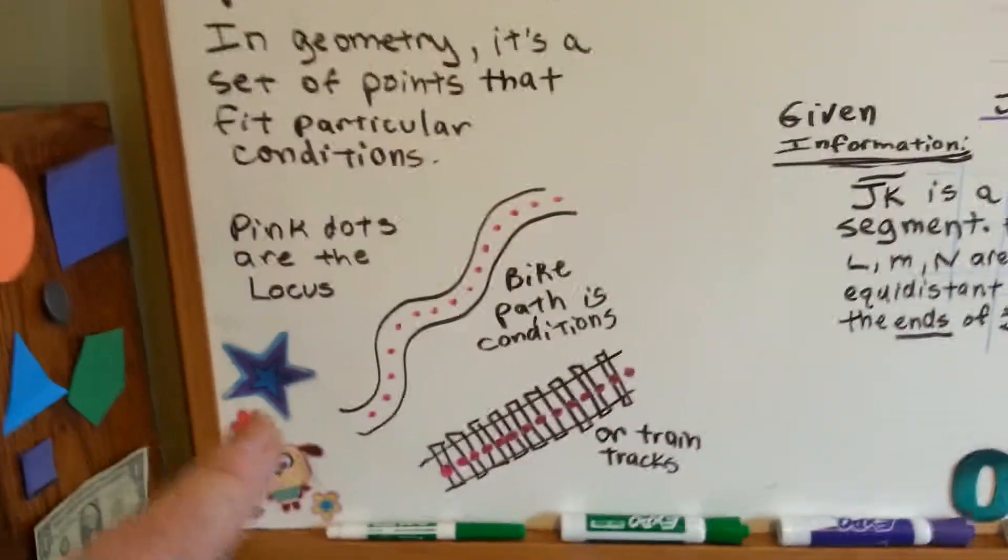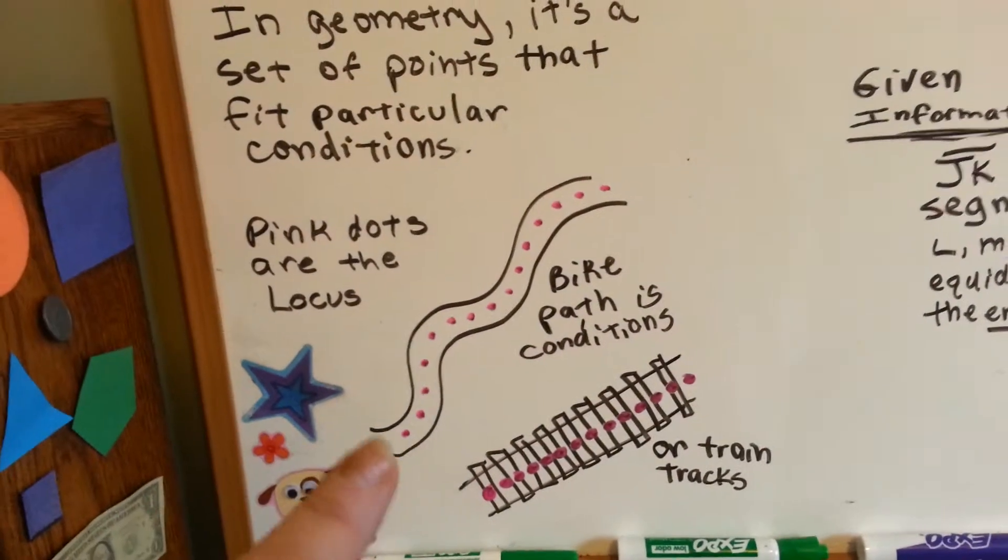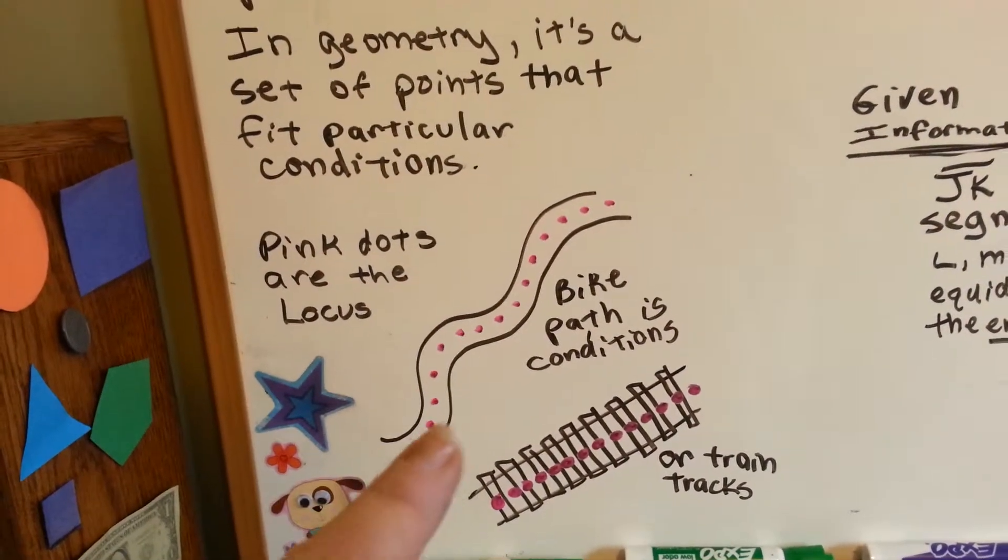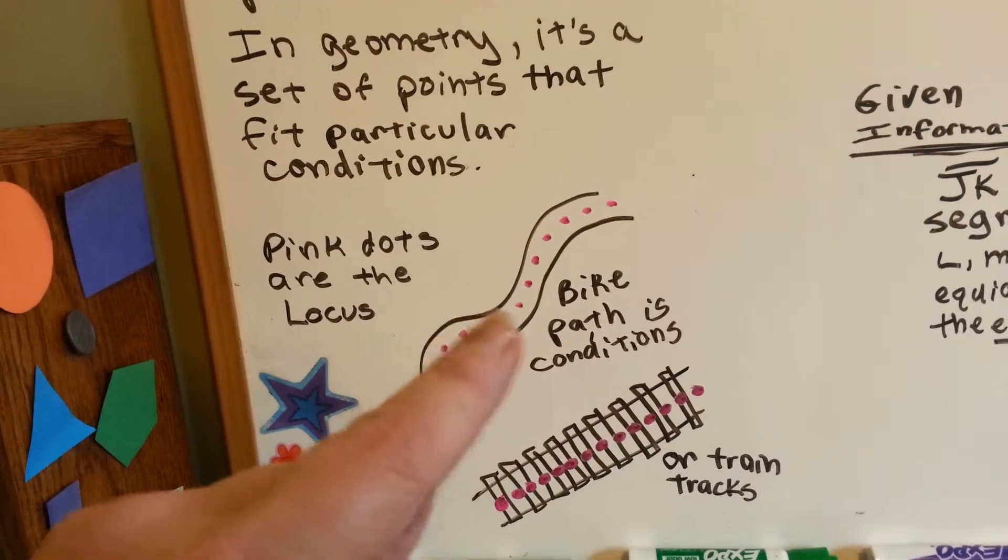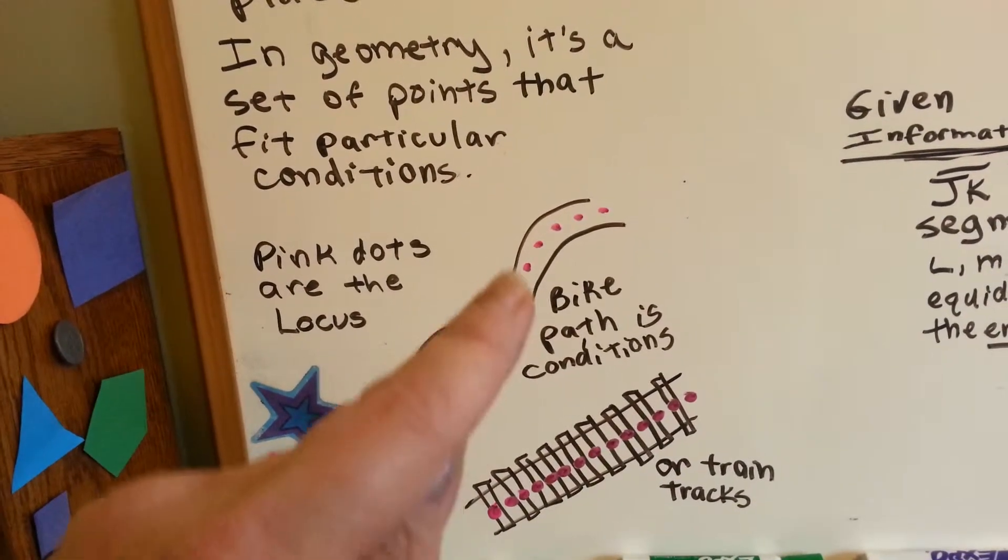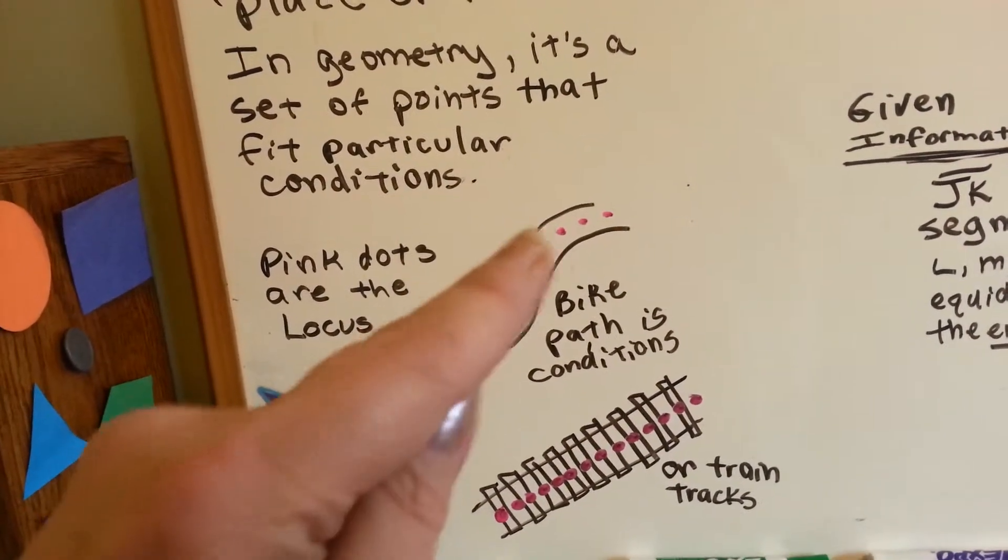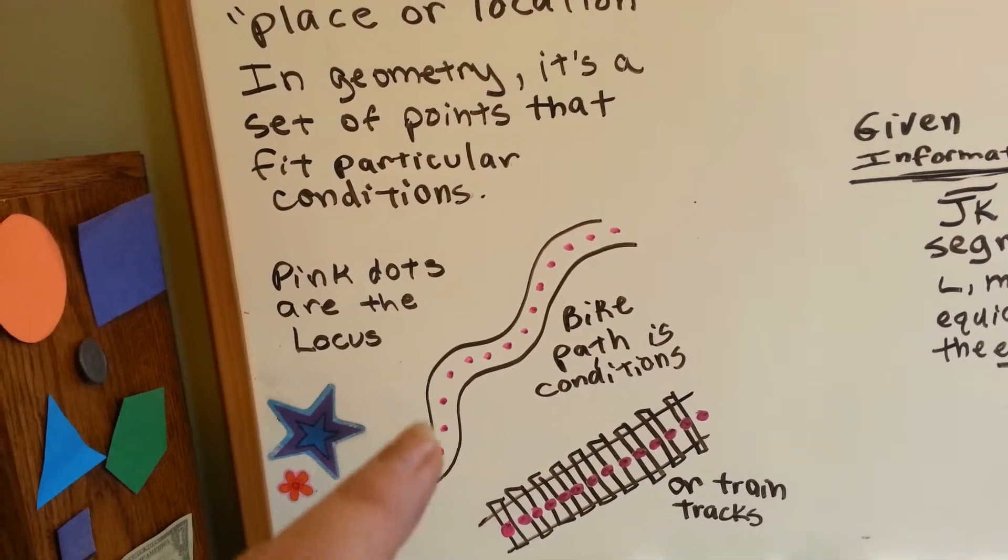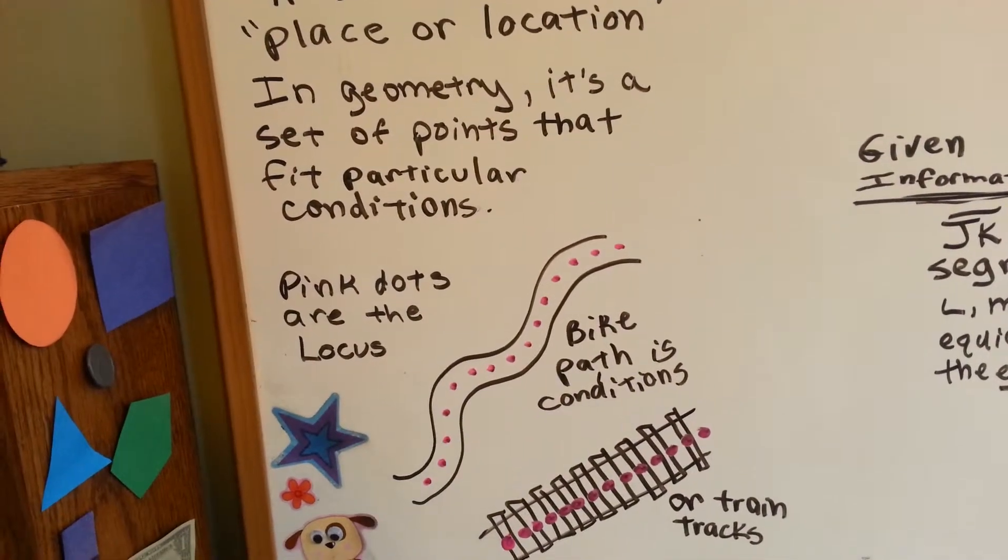I want you to look at these two drawings. The pink dots would be the locus, the bike path would be the conditions. If you're riding your bike and you're told you're not allowed to go off the path, then the bike path is the conditions, and the pink dots is the locus.